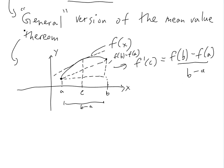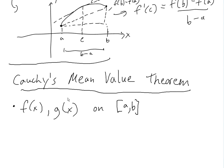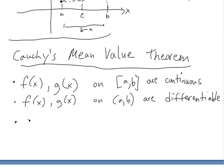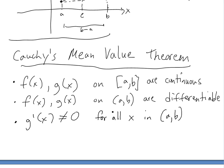The general version, Cauchy's MVT, basically states: the first condition is that f(x) and g(x) are continuous on the closed interval [a, b], meaning the values must exist at a and b. Another condition is that both functions are differentiable on the open interval (a, b) — they don't have to be differentiable at the endpoints. A third condition is that g'(x) cannot equal zero for any number strictly between a and b, though it can equal zero at a or b.